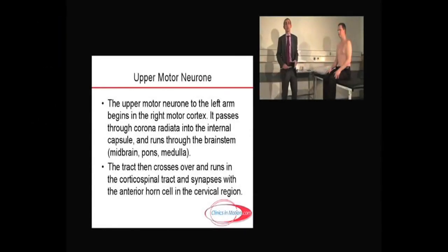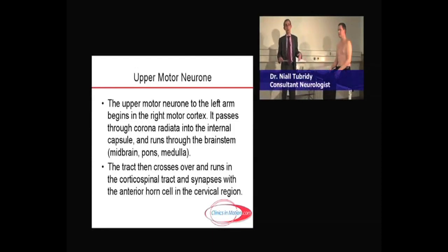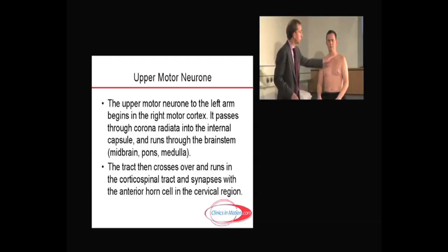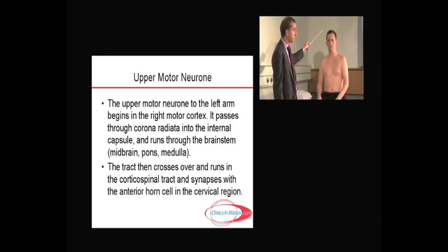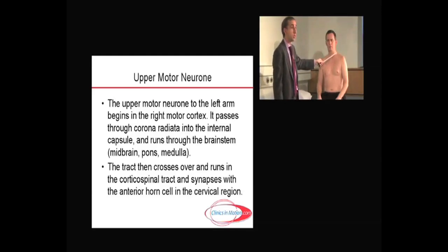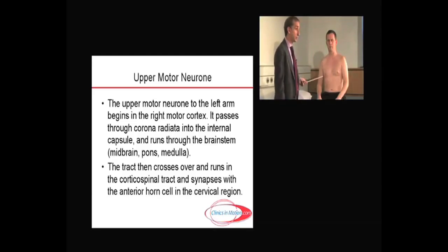We're now going to do the motor examination, starting with the upper limb, then moving to the lower limb. To recap: an upper motor neuron lesion to the left arm starts at the right motor cortex, comes through the corona radiata into the internal capsule, runs through the brain stem — midbrain, pons, medulla — then crosses over and runs in the corticospinal tract to the cervical area where it synapses with the anterior horn cell. That is the pathway of the upper motor neuron.